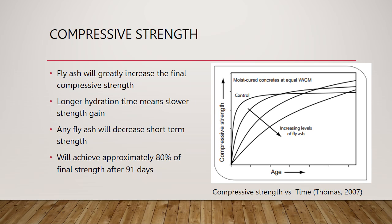Fly ash's final hydrated product is a large crystalline network which provides superior long-term compressive strength. Up to 50% of cement replacement will result in an increase of ultimate strength, as seen on this chart. Additionally, the addition of any amount of fly ash will reduce early strength. It requires approximately 91 days for fly ash concrete to reach 80% of its maximum strength, which is reached in roughly 10 days with Portland cement concrete.